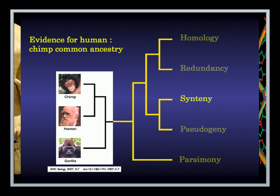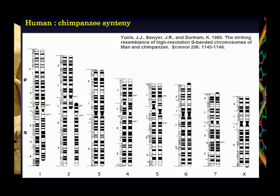The synteny argument goes further: okay, we have all the same genes — but are they in the same spatial orientation relative to one another? If these two species are simply descendant versions of an original species, you would expect that the gene order would still be the same when we compare them today. And that is also what we see when we look at the genome.